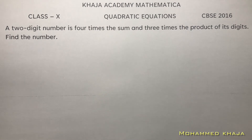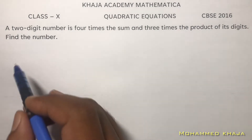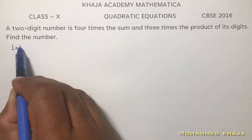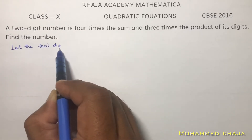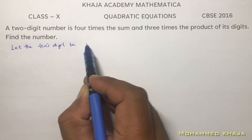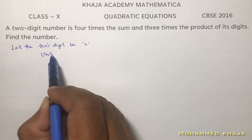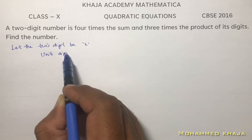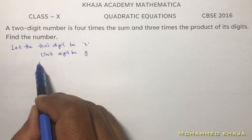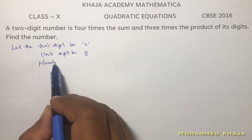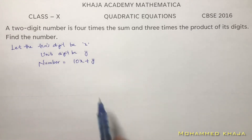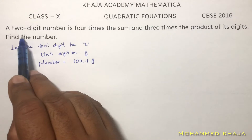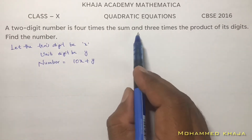A two-digit number is four times the sum and three times the product of its digits. Whenever a two-digit number problem comes, first let the tens digit be x and the unit digit be y. Then the number will be 10x plus y.